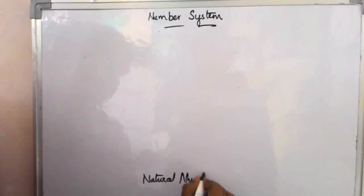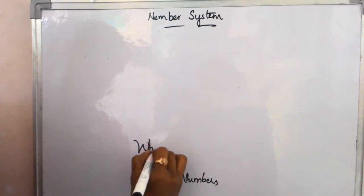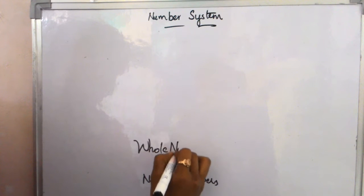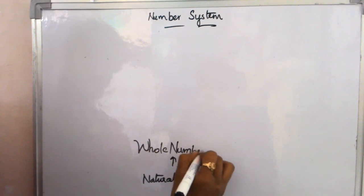Number systems are the first one. Natural numbers. Natural numbers are the 1 to infinity. And next is whole numbers.